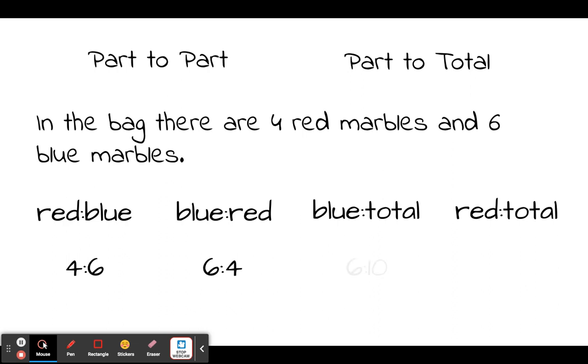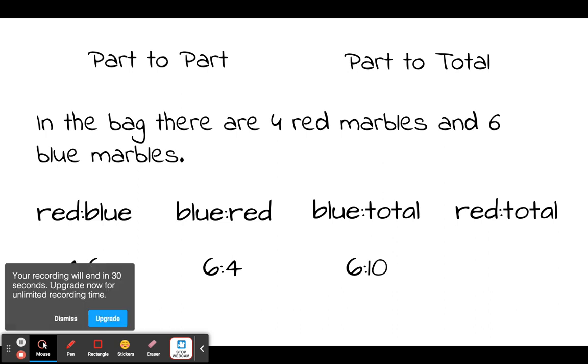Now we're going to compare blue to total and blue to total would be six because there's six blue marbles and then ten because four plus six is ten. And then the last one is we're going to compare red to total and that would be four to ten because there are four red marbles and ten total marbles in the bag. So the main point here is we have to remember that order matters. If it's red to blue or blue to red, those are going to be different ratios. So go ahead and finish those notes and move on to the next lesson.